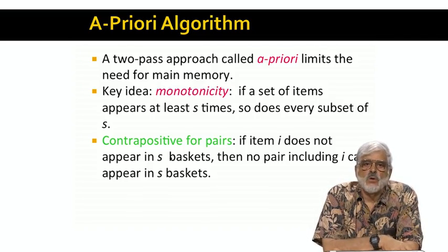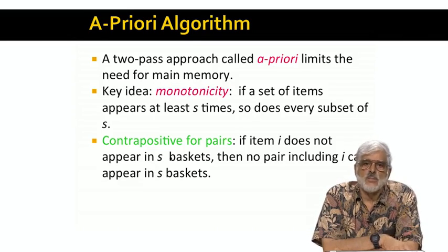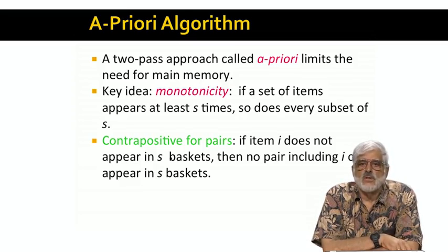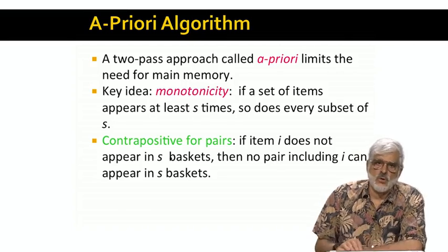Now we actually use this definition in its contrapositive form. For example, when we are looking for frequent pairs, the key observation is that if an item i does not appear s times by itself, then no set containing i could be frequent. Because if the set of i and j appears in s baskets, then surely i appears in all those baskets, and maybe others. This is really obvious, but it's also essential, and I want to make sure everyone is on board.